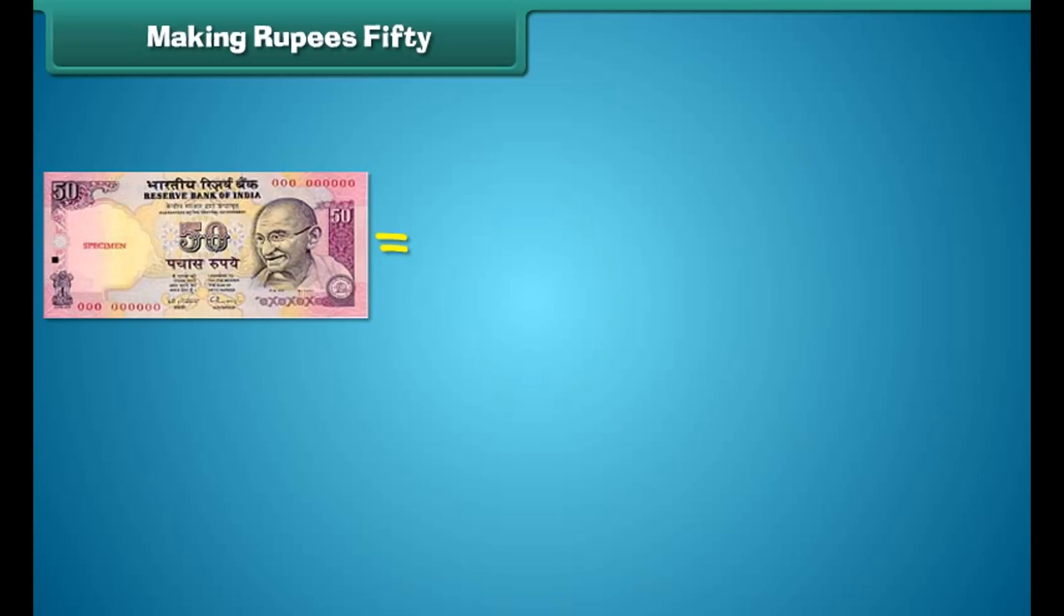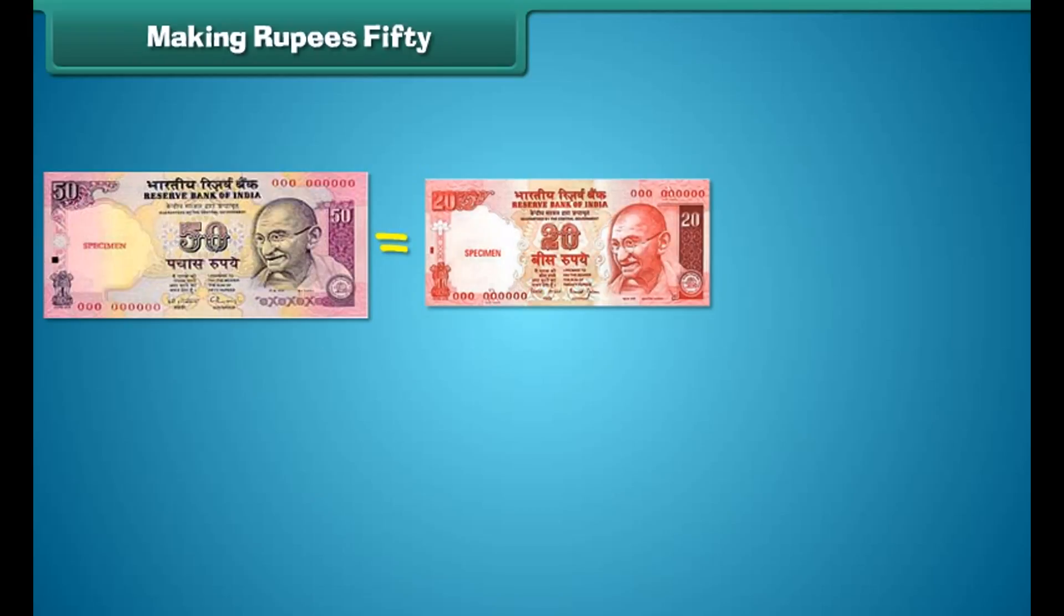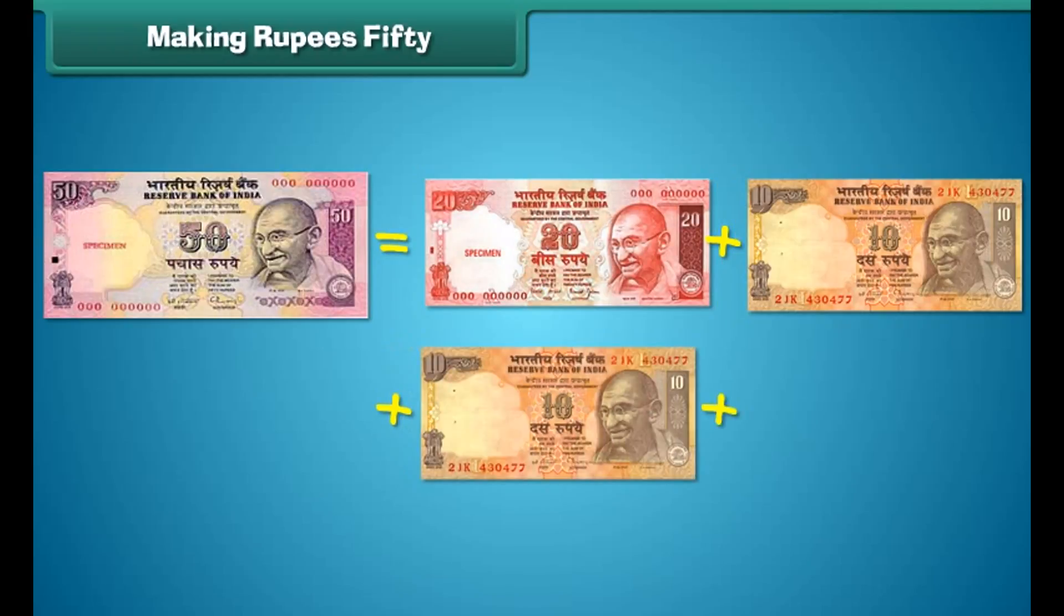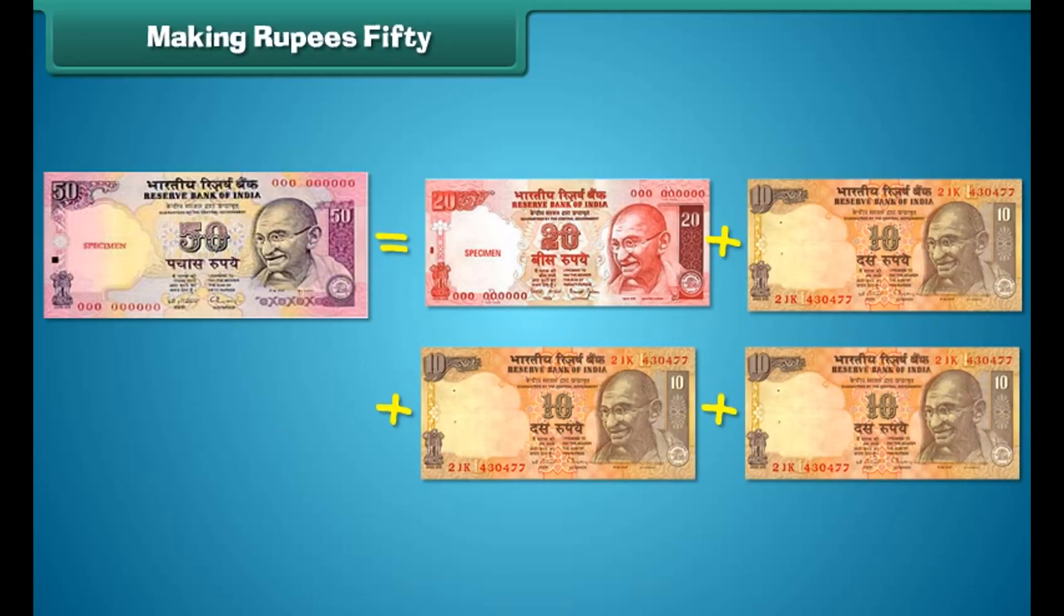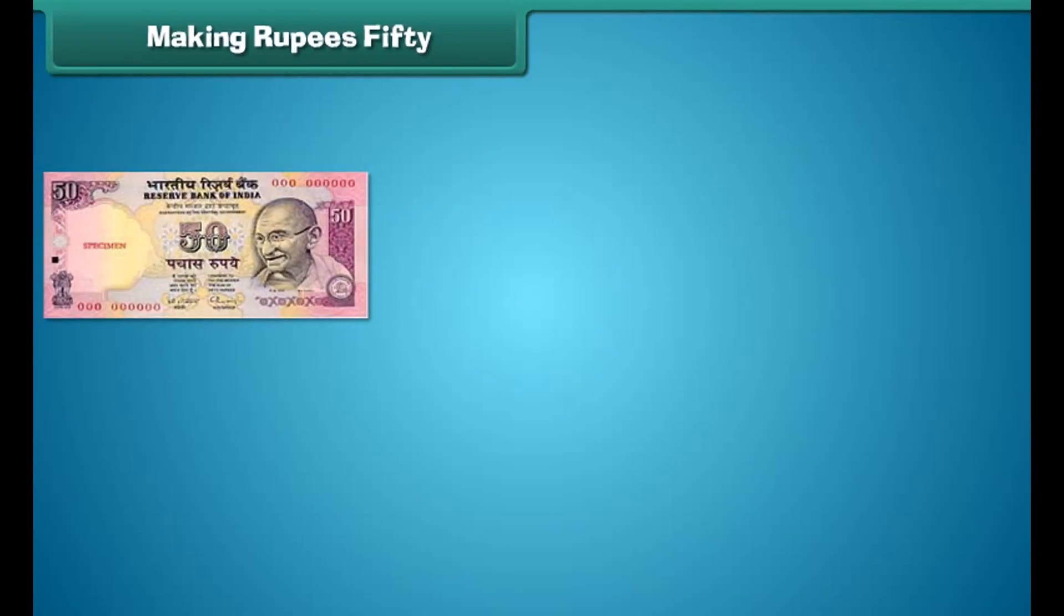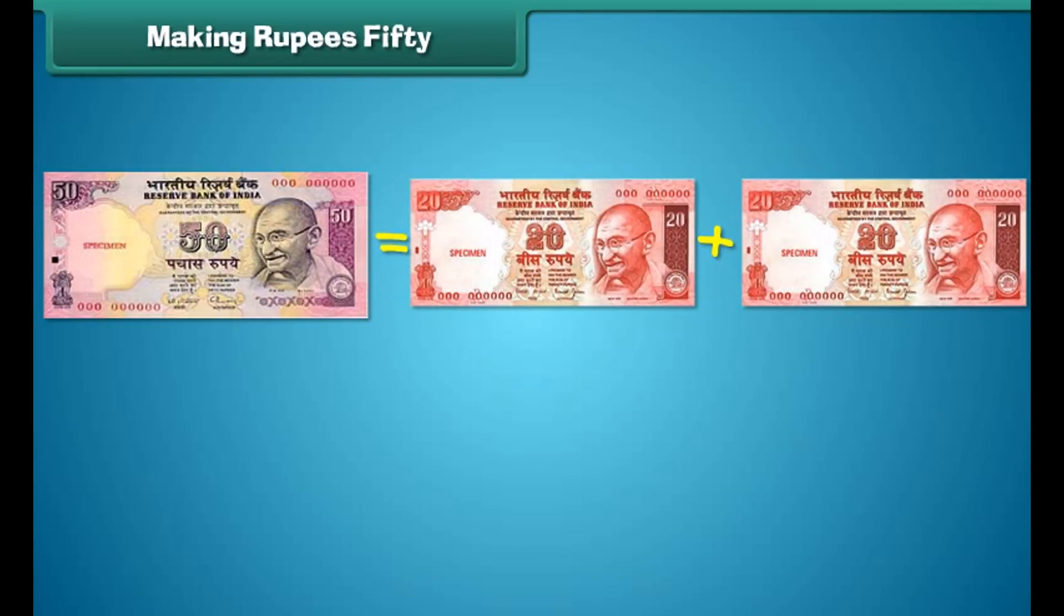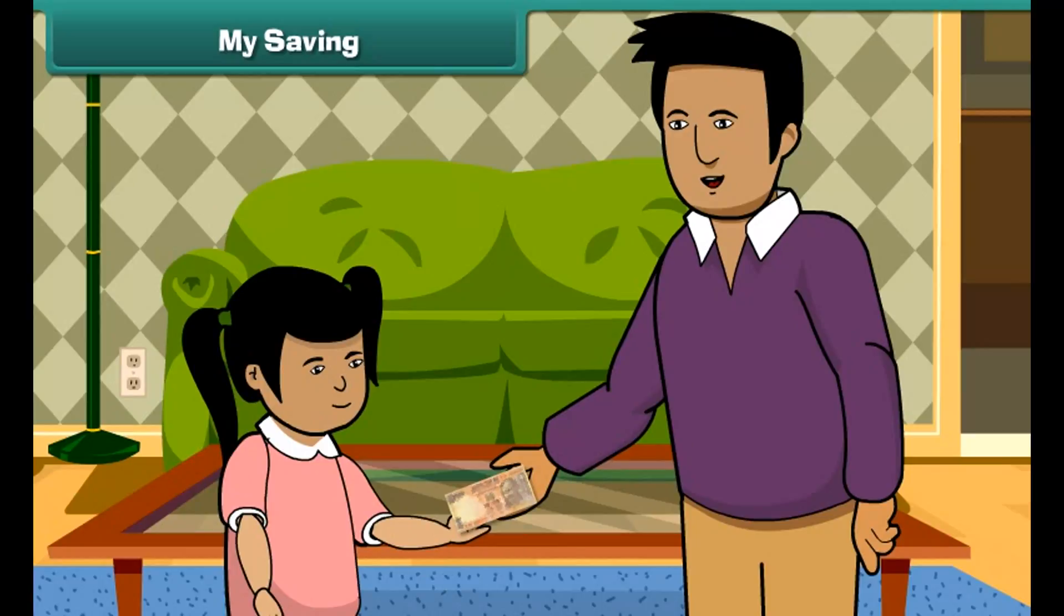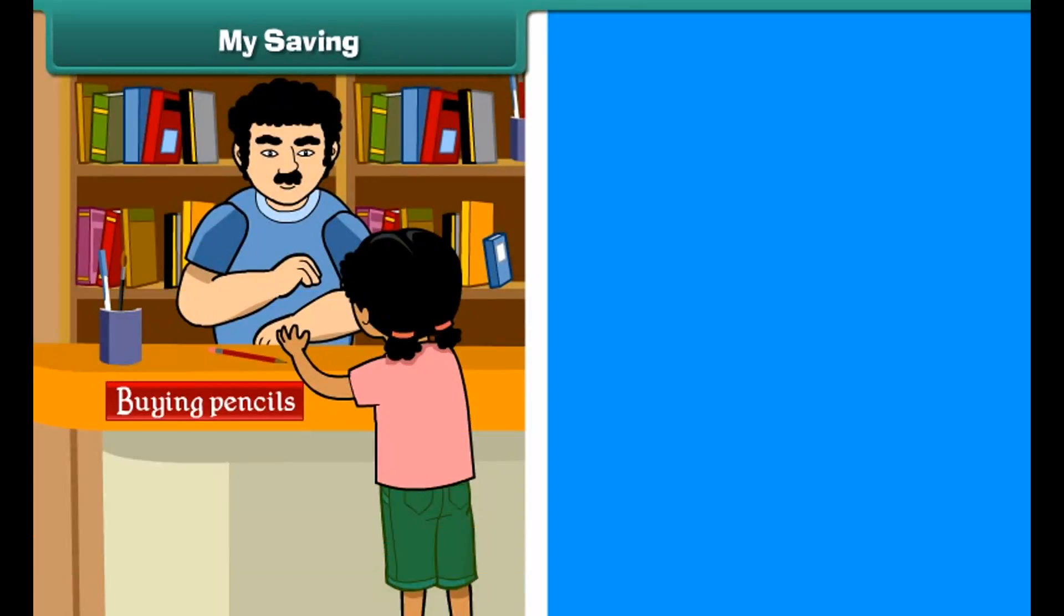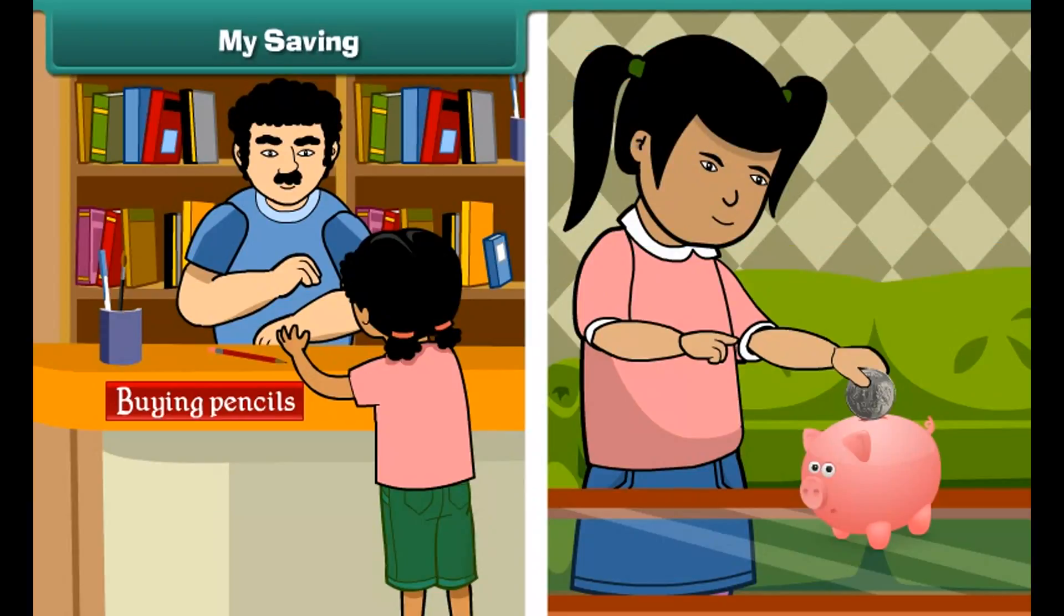Similarly, a 50 rupees note is equal to the sum of 5 ten rupees notes. 50 rupees note is equal to the sum of 1 twenty rupees note and 3 ten rupees notes. 50 rupees note is equal to the sum of 2 twenty rupees notes and 1 ten rupees note.